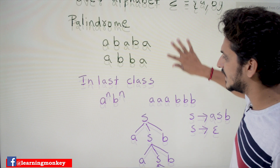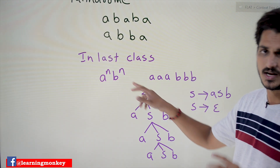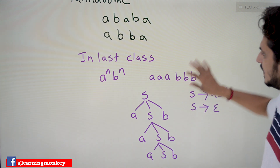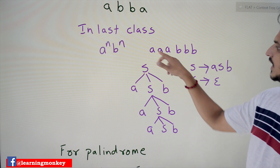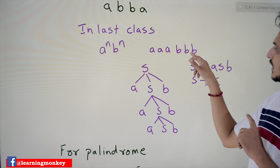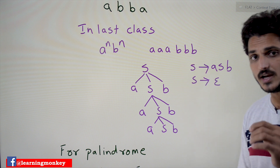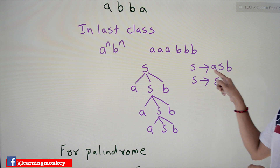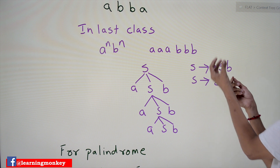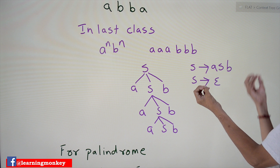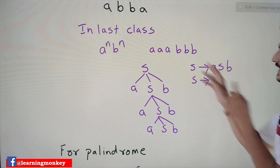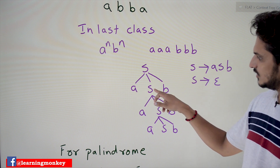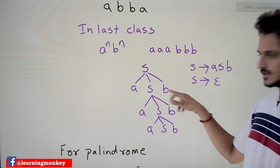Let's refresh the previous class example on a^n b^n so you can easily understand how to write the CFG for this. What we discussed is: if you have three A's, an equal number of B's should be there. In order to write a CFG for this language, we wrote S → aSb. The meaning is: if you find A you have to find B, so equal number of A's and B's. If you find A, you call S; after completion of S you check for B.